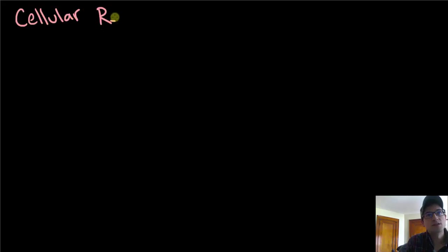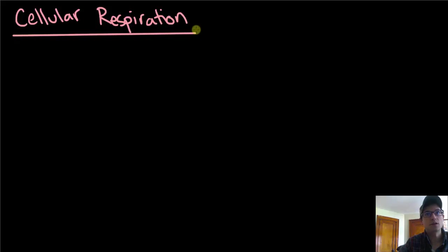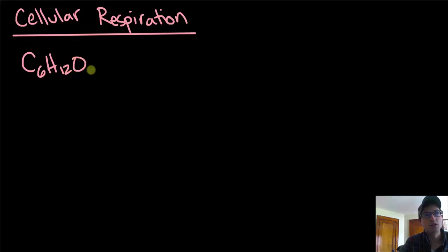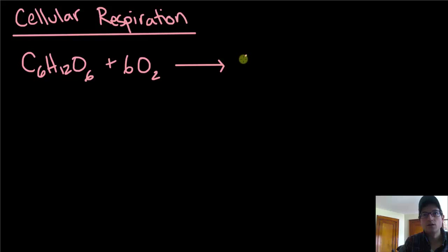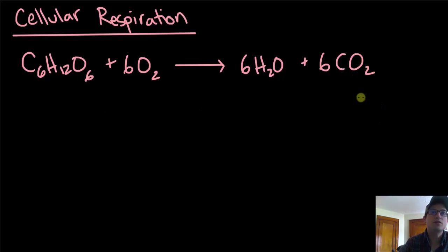Let's start with the biggest picture overview that we can handle. For cellular respiration, we're looking at the process of breaking down glucose into carbon dioxide and water, and also harnessing some energy along the way. We start with glucose, which is C6H12O6, react it with 6 molecules of oxygen, and the products are 6 molecules of water and 6 molecules of carbon dioxide. This is the overall equation for cellular respiration.